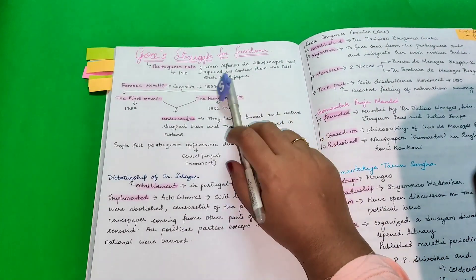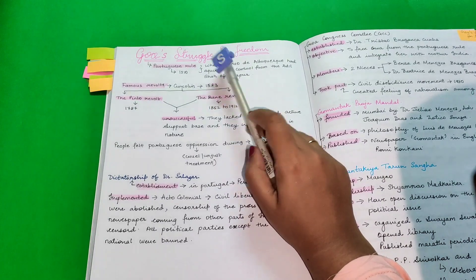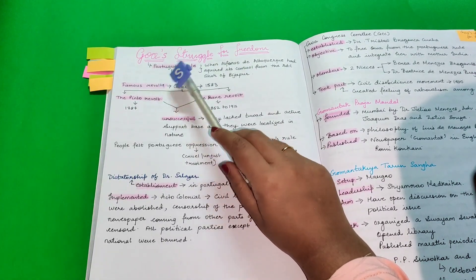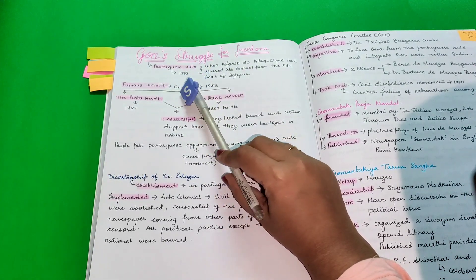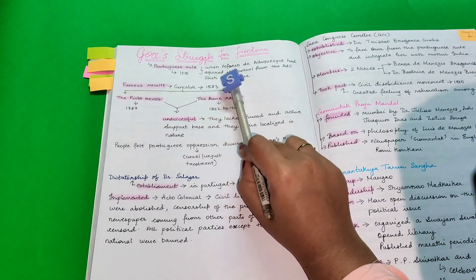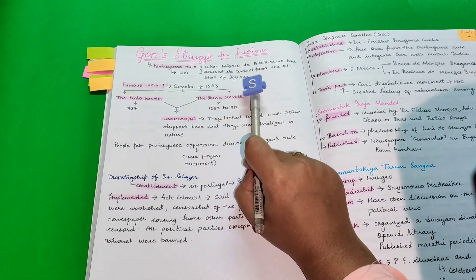Hi, today we will be discussing Goa's struggle for freedom. Goa came under Portuguese rule in 1510 when Alfonso de Albuquerque acquired its control from Adil Shah of Bijapur.